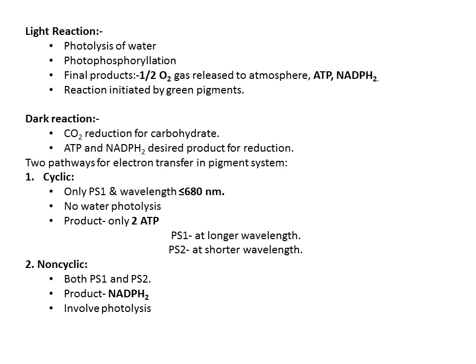In the light reaction, the steps include: first, photolysis of water — water gets photolyzed; then photophosphorylation. The final products are half a molecule of O2 released to the atmosphere, ATP, and NADPH2. ATP and NADPH2 are the reactants for the dark reaction, so completion of light reaction causes initiation of the dark reaction. Light reaction is initiated by green pigments.